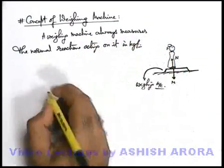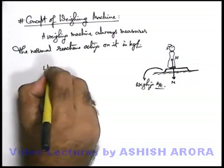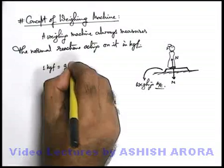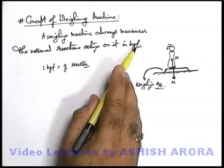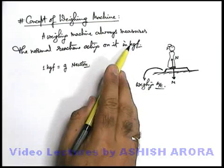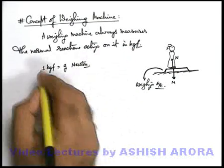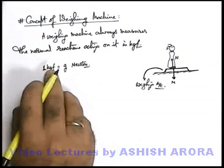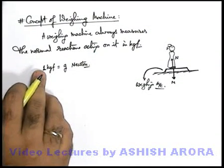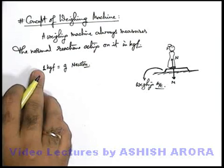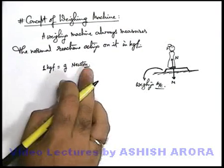The weighing machine measures the reading in kilogram force. We can write: 1 kilogram force is equal to g newtons. Kilogram force is another unit of force which gives you the idea of what is the weight of a particular mass — 1 kilogram force is the weight which 1 kg exerts on a surface due to the effect of gravitational force. So the weight of a 1 kilogram body is g newtons.